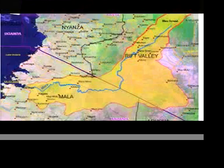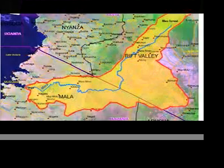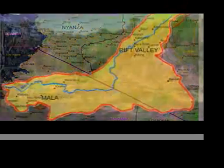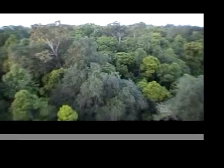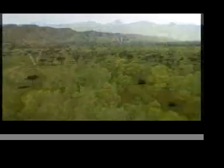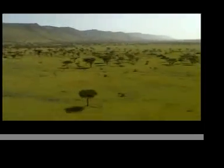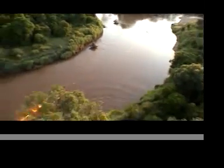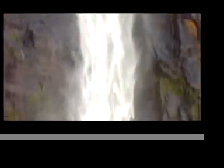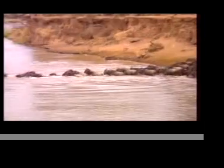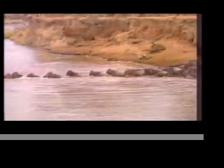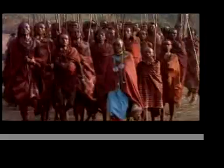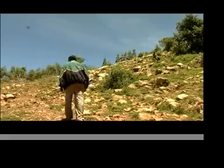The Mara River Basin covers a trans-boundary area of about 13,500 km across Kenya and Tanzania. The Mara River runs 395 km from its source in Mao Forest to the point where it drains into Lake Victoria. It runs through the Masai Mara Game Reserve and Serengeti National Park in Tanzania. The two areas are of global conservation significance and great economic importance to the local communities.